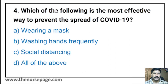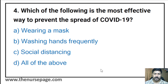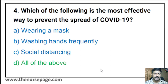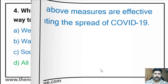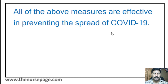Fourth question: Which of the following is the most effective way to prevent the spread of COVID-19? Wearing a mask, washing hands frequently, social distancing, or all of the above? The correct answer is all of the above. Wearing a mask, washing hands frequently, and social distancing are the most effective ways to prevent the spread of COVID-19 and reduce the risk of transmission.